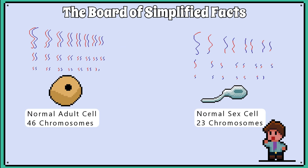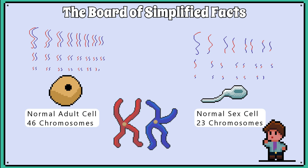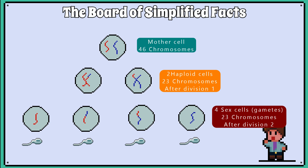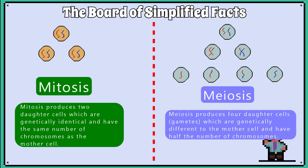The genetic makeup of the sex cells is also different because when meiosis occurs, sections of chromosomes are mixed up to create variation. Finally, meiosis always produces four daughter cells, and I will go through the mechanism later in the video.